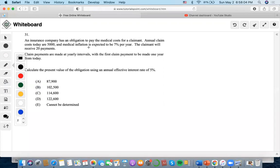Okay, so for this problem, an insurance company has an obligation to pay the medical cost for a claimant. Annual claim costs today are $5,000 and medical inflation is expected to be 7% per year. This is a creative way of explaining a present value scenario or like a cost that we have to deal with a loan or whatever.